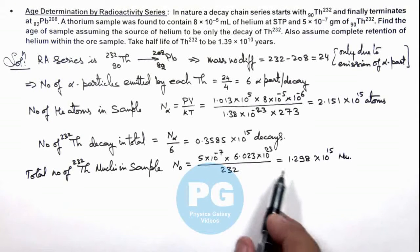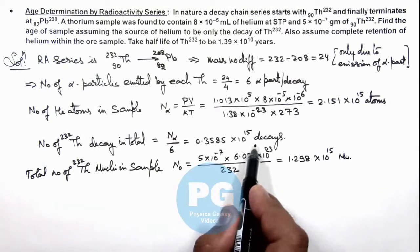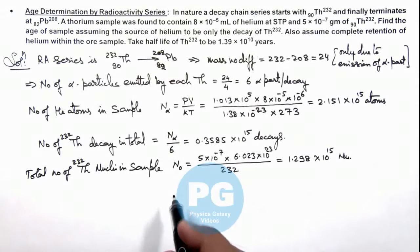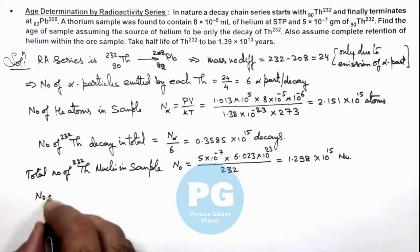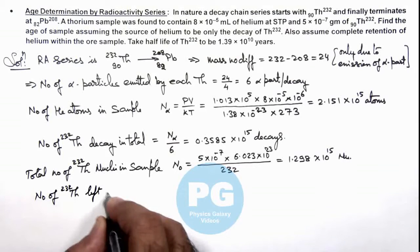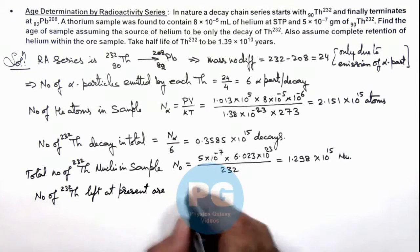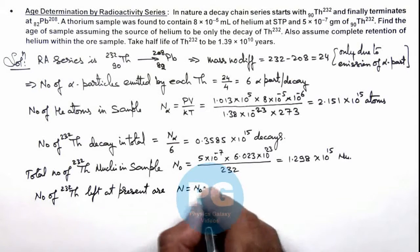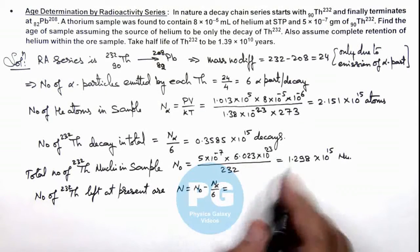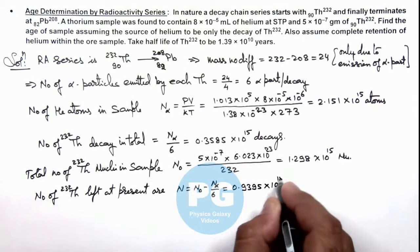And out of these much number of nuclei, the total number which are decayed till now are given as this which we have calculated by using the amount of helium present in the sample. So we can write number of thorium-232 left at present, we can write N is equal to N_0 minus N_alpha by 6. So if we subtract these two values, this gives us 0.9395×10^15 nuclei.